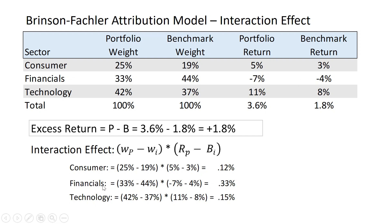In financials we had 3% excess return and in technology we also had 3% excess return, but in financials we took a bigger underweight position. So our interaction effect with financials is bigger than our interaction effect with technology. Adding all three up, you get 60 basis points.